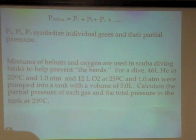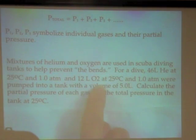So for a dive, 46 liters of helium at 25 degrees Celsius and one atmosphere, and 12 liters of O2 at 25 degrees Celsius and one atmosphere were pumped into a tank that has a volume of 5 liters. Calculate the partial pressure of each gas in that 5 liter tank and the total pressure in that 5 liter tank, if the temperature is 25 degrees Celsius.